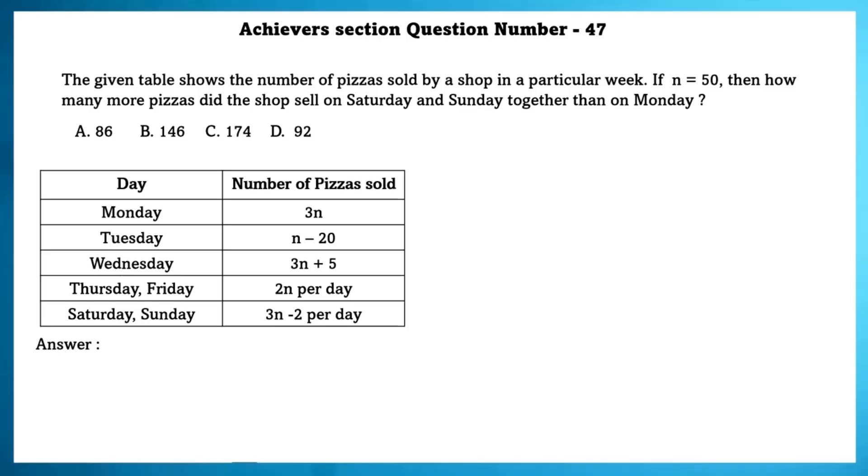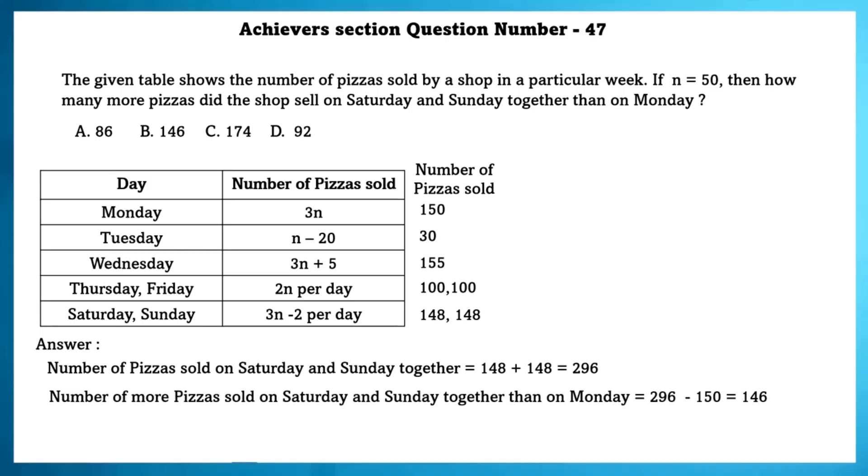Achieve section question number 47. The given table shows the number of pizzas sold by a shop in a particular week. If n is equal to 50, then how many more pizzas did the shop sell on Saturday and Sunday together than on Monday? Number of pizzas sold on Saturday and Sunday together is equal to 296. Number of more pizzas sold on Saturday and Sunday together than on Monday is equal to 146.